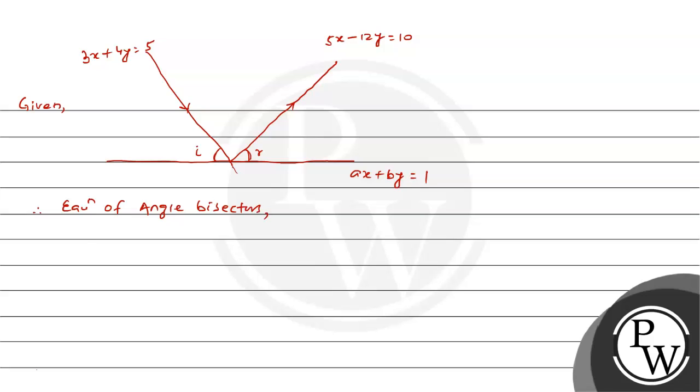This will be mod of (3x plus 4y minus 5) by square root of (3 square plus 4 square) equal plus minus mod of (5x minus 12y minus 10) by square root of (5 square plus 12 square). And this becomes